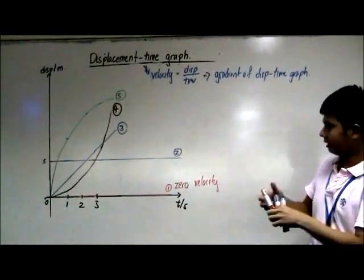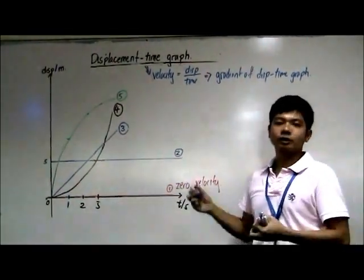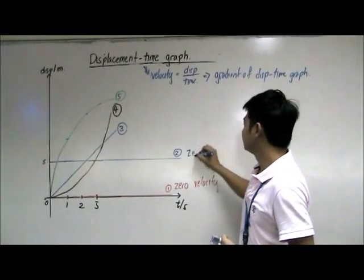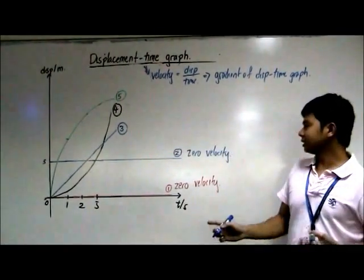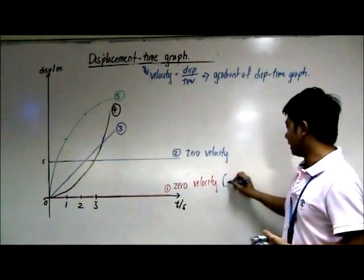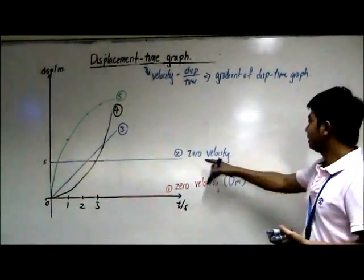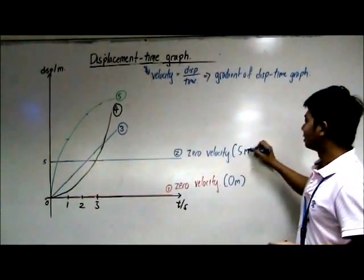Second graph, blue line, is again another horizontal line. The gradient is zero, so this is again zero velocity. What's the difference between one and two? This is zero velocity at zero meter, and the blue line is zero velocity at five meter.